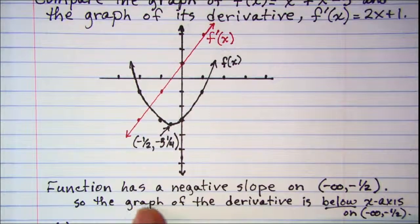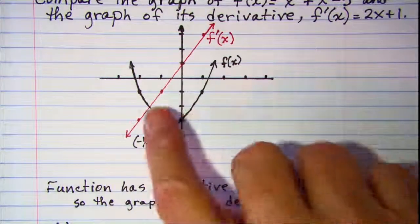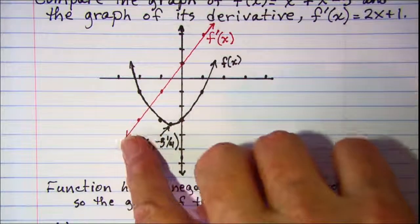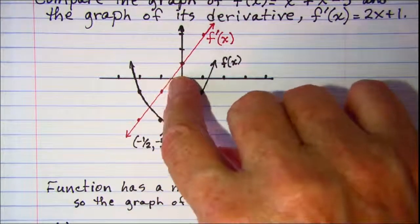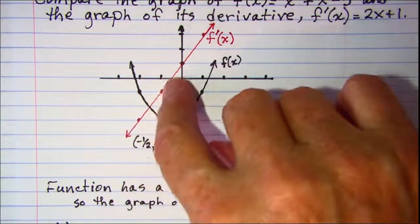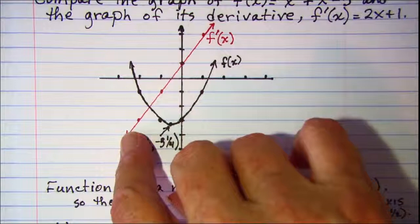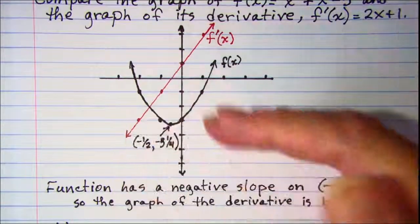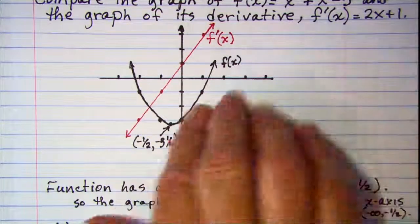Notice that the graph of the derivative is below the x-axis from negative infinity up to x equals negative one half. That section of the red line is down below the x-axis.